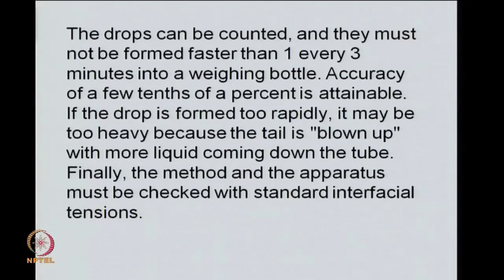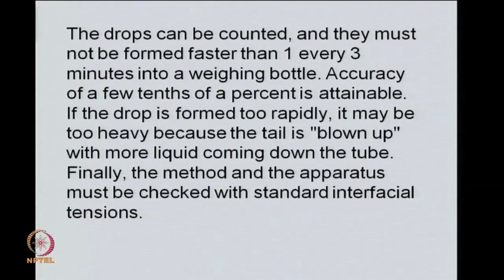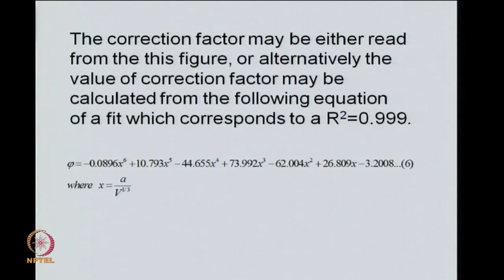So if we can see how slow those drop formation sequences should be, we can collect a number of drops in a weighing bottle. Each drop should form slowly, so slowly that not more than one every three minutes would fall. And that I think in most people's minds would be not coming easily. If we can ensure that not more than one drop forms every three minutes, then accuracy to a few tenths of a percent is attainable. If the drop is formed too quickly, it will be actually too heavy because of the tail being blown up with more liquid coming down the tube.